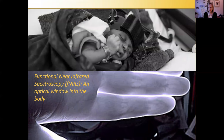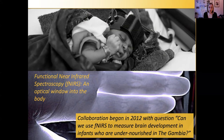This work with functional near-infrared spectroscopy (fNIRS), which gives us an optical window into the body and allows us to measure oxygen changes in response to brain activation, was seen by a group of researchers working in the Gambia. They approached my colleague and me in 2012 with the question: can we use fNIRS to measure brain development in infants who are undernourished in the Gambia?